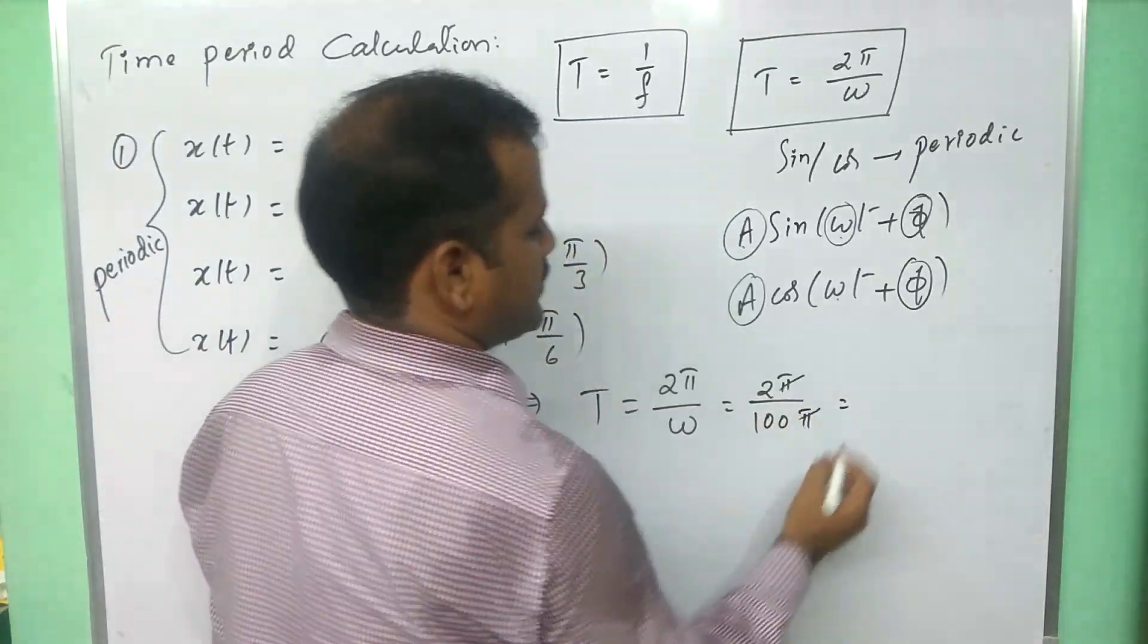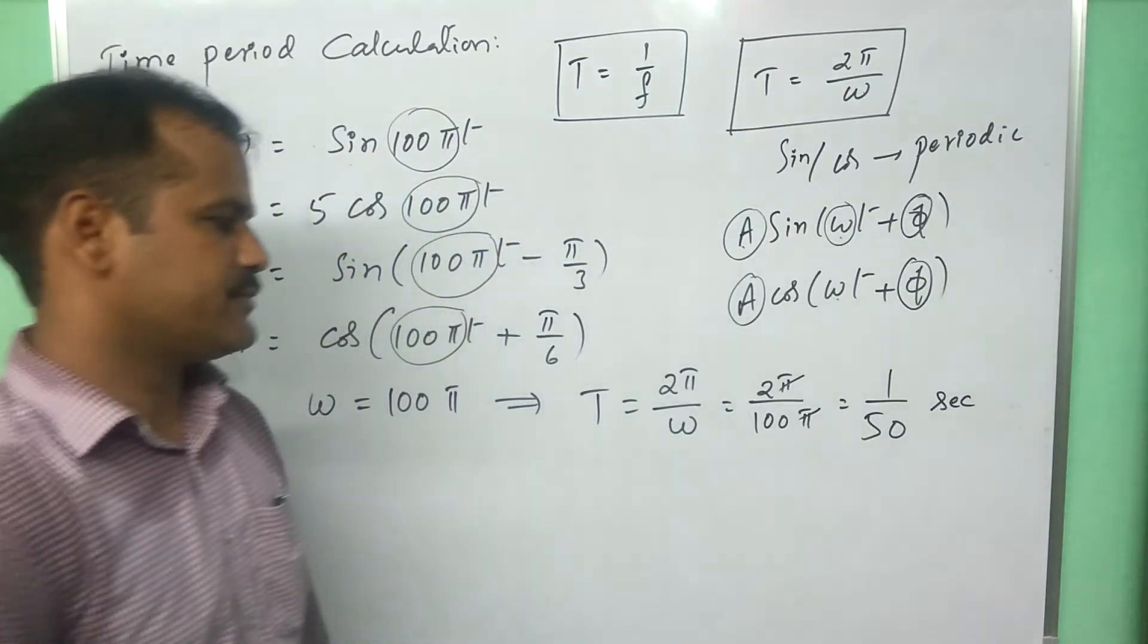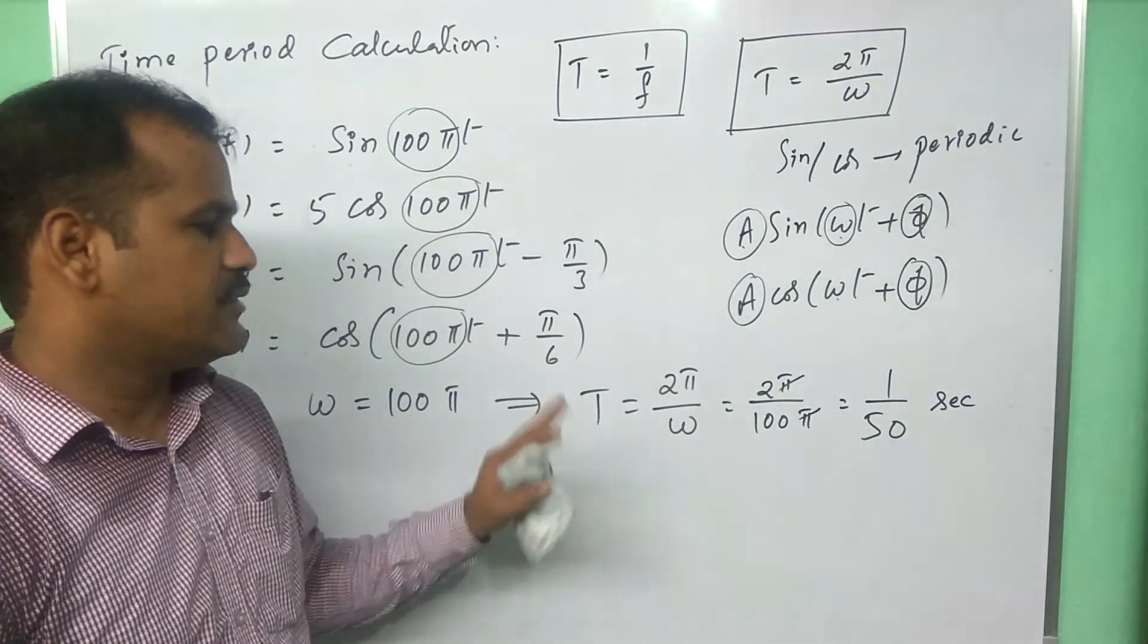So, the pi pi gets cancelled. 1 by 50 seconds is the time period of these signals.